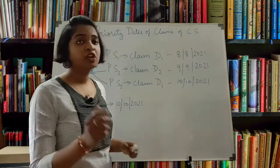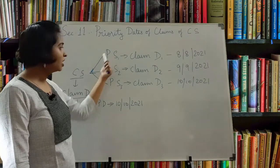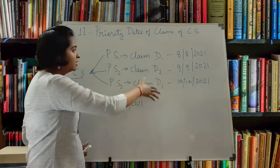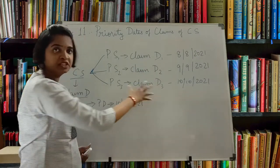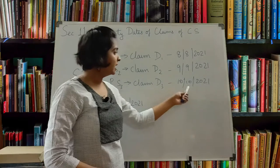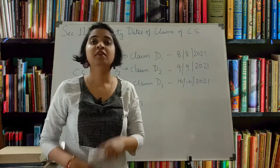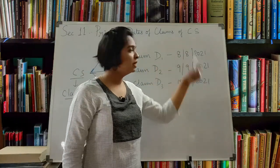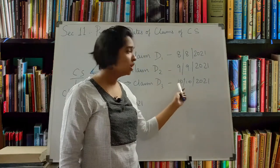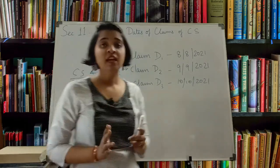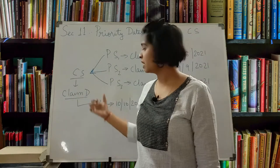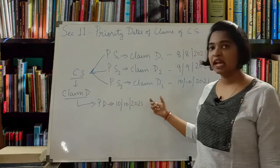When you come to the complete specification, you will take all three provisional specifications and file it as Claim D - instead of D1, D2, D3 - because ultimately it was just changing of the same claim. So for Claim D, the priority date will be 10-10-2021 and not 8-8-2021. Why? Because when you filed Claim D1 on 8-8-2021 you changed it, changed it again, and finally filed it on 10-10-2021. Claim D was finalized only on 10-10-2021.